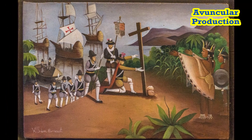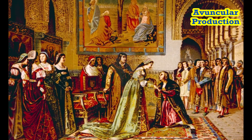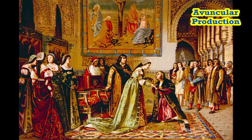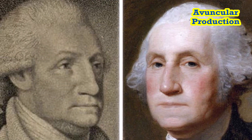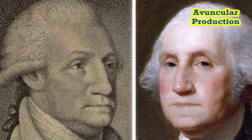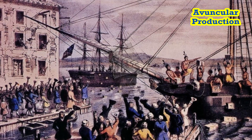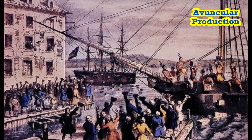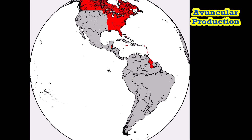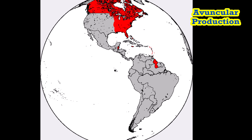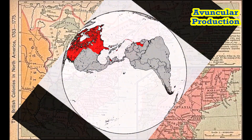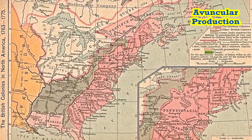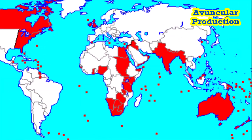Antebellum Period and Civil War, 1825–1865. 6. John Quincy Adams, 1825–1829, Democratic-Republican. Advocated for modernization and educational advancement. 7. Andrew Jackson, 1829–1837, Democratic. Founder of the Democratic Party and known for his populist policies.